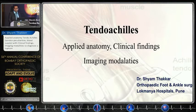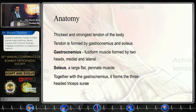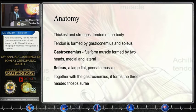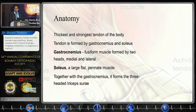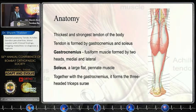I know most of us would be knowing about it. Achilles is the thickest and strongest tendon, formed by gastrocnemius and soleus. Gastrocnemius is a fusiform muscle formed by two heads — medial and lateral — and the soleus is a large pennate muscle. Together they form the triceps surae.